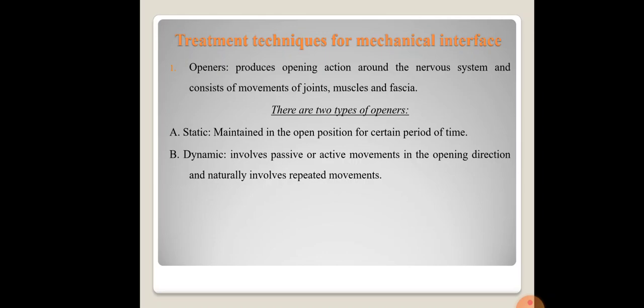Openers: opening technique — we already know opening means moving away. So openers are nothing but producing an opening action around the nervous system and consist of movements of joint, muscle, and fascia. For example, if a muscle is inducing tension or pressure on the nervous system — whether from muscular spasm, tightness, adhesion, knots, or bands — the muscle is released so that the adhesion, knots, and spasm are reduced, hence reducing the pressure on the nerve and relieving pain.